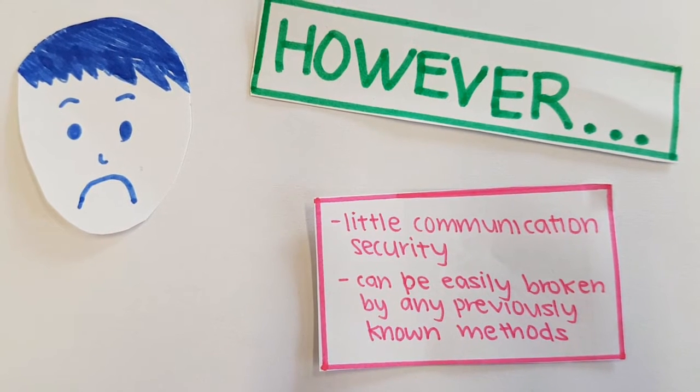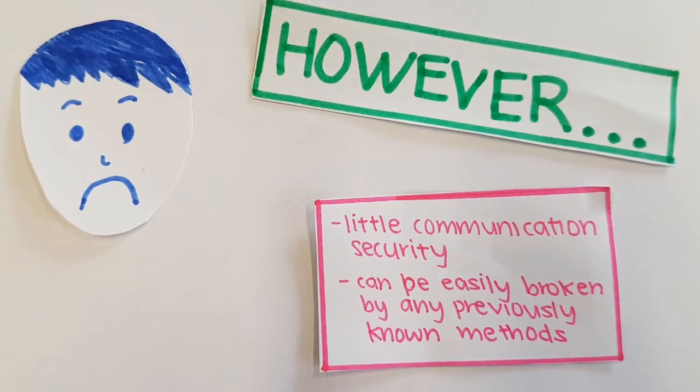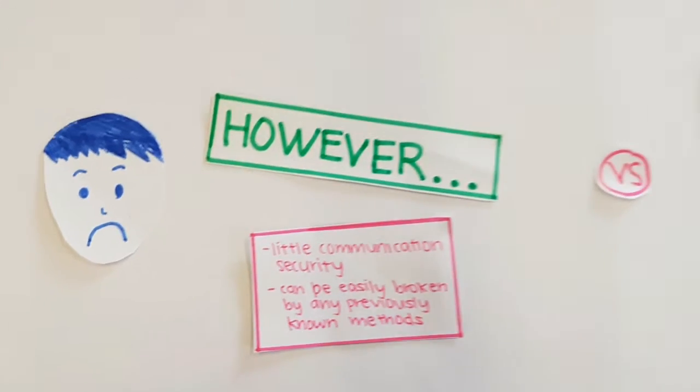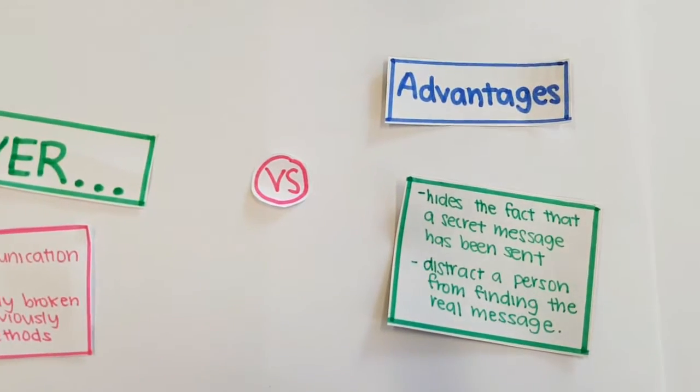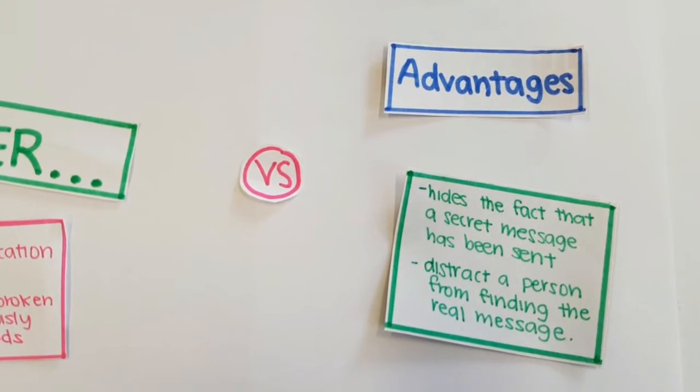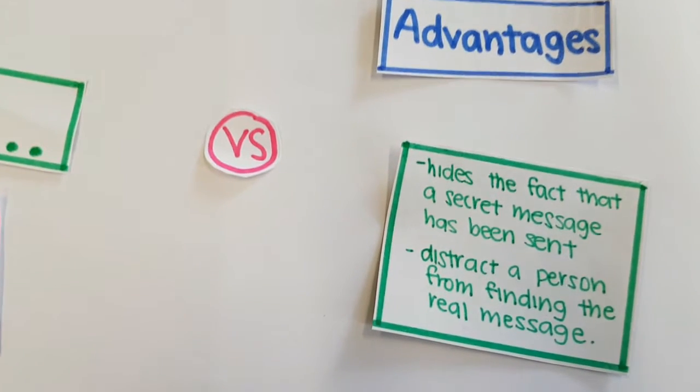As such, all the methods used to crypto-analyze substitution ciphers can be used to break Baconian ciphers. The main advantage of the cipher is that it allows the hiding of the fact that a message has been sent at all.